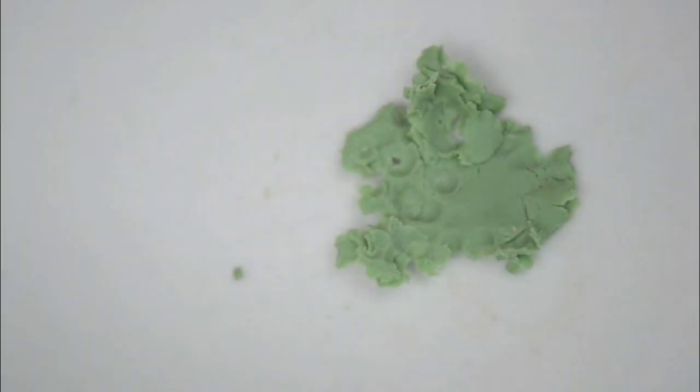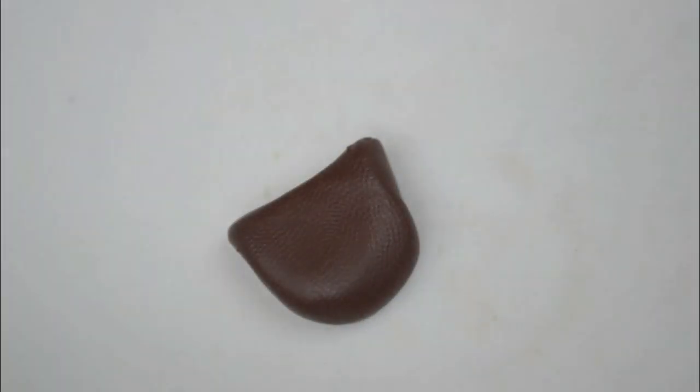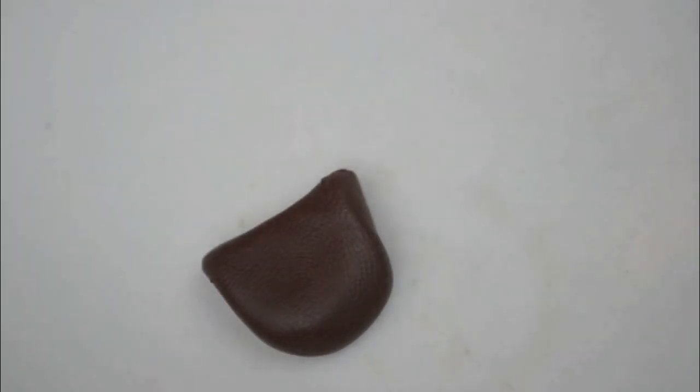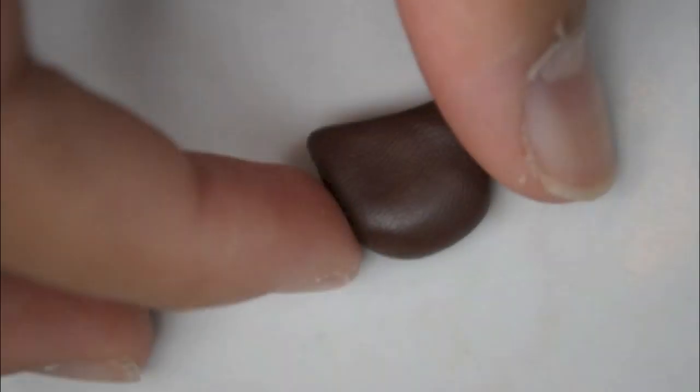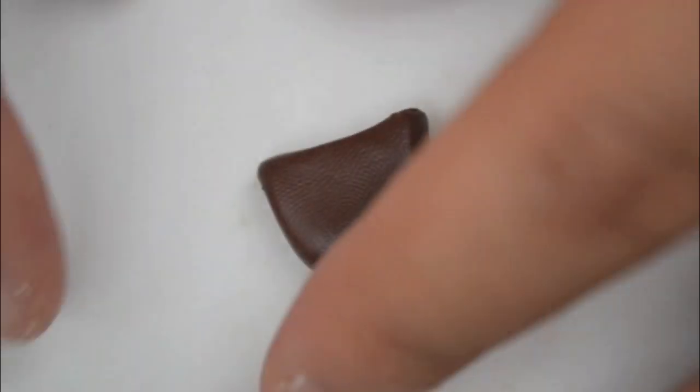Now we're going to make the meat patty. Take a piece of brown and then pinch the tops to make them ears. You don't have to be too careful here. The rougher the better, I think.